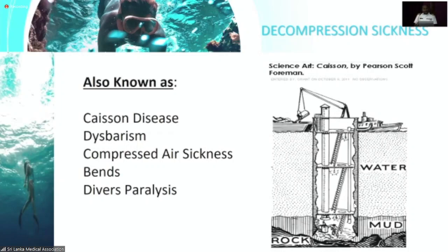The name 'caisson disease' came from structures people used to work inside underwater, where pressurized air kept water out. When those workers came up, they had symptoms of decompression sickness. The name 'bends' originated because patients experiencing joint pain would try to keep their joints bent to reduce the pain — and that is how the name bends came into use.